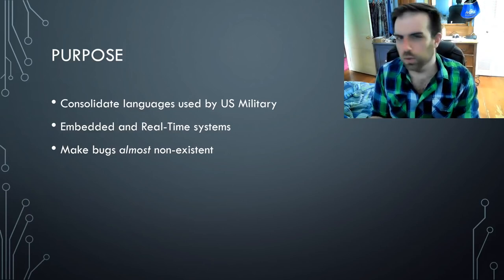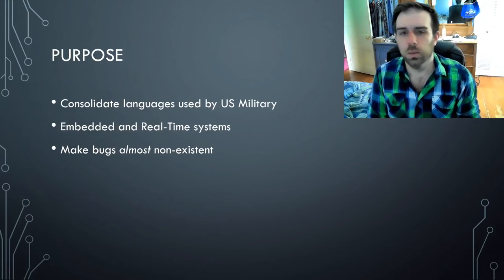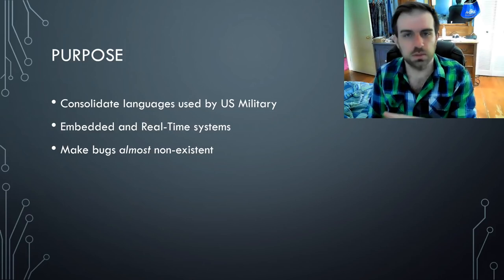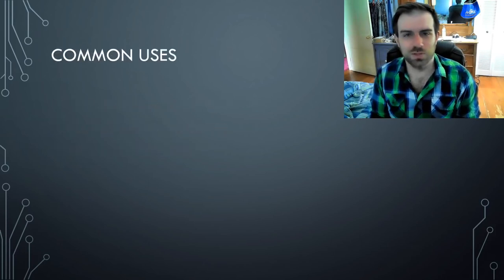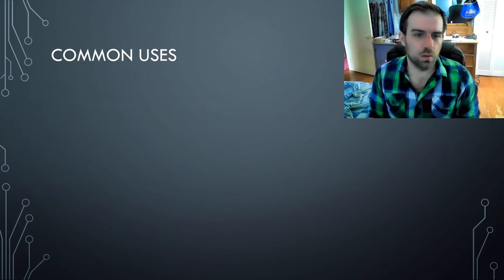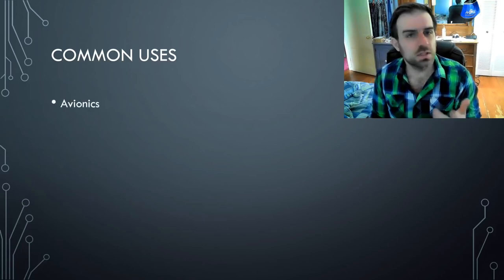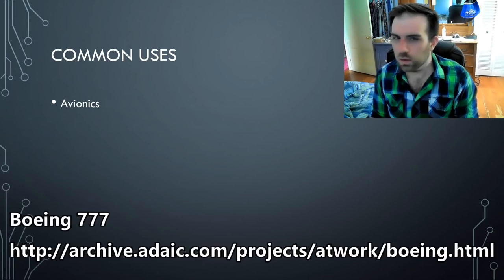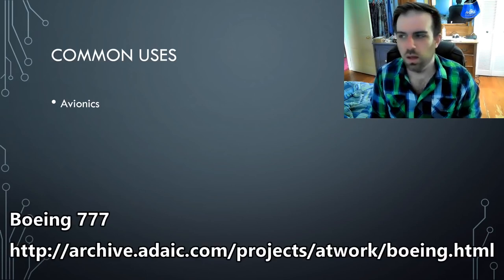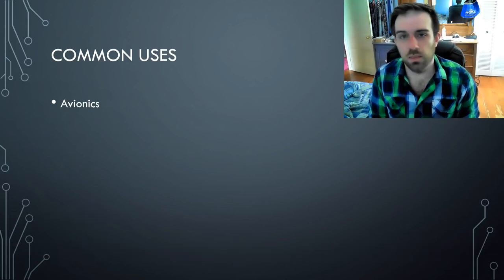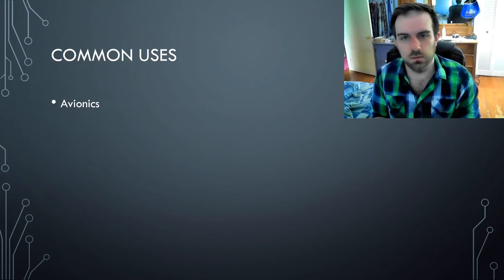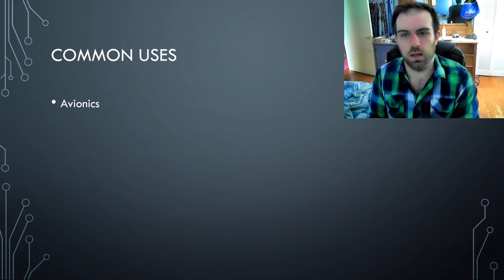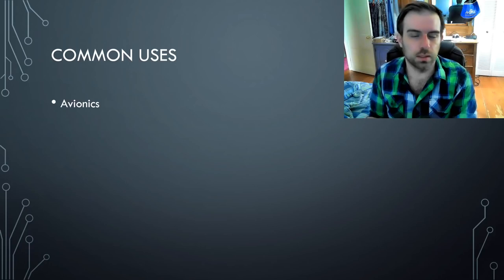You'll never get bug-free code unless the program is super trivial, but you can make steps to make it less buggy. As a result, a lot of common uses of Ada are with avionics. I believe it's the Boeing 747 that is programmed almost entirely in Ada, but it's not the only jet done that way. These kinds of things aren't always publicly available, but there are quite a few jets that are known to be programmed partially or overwhelmingly in Ada.